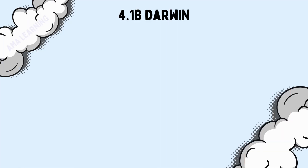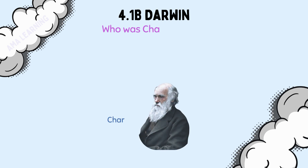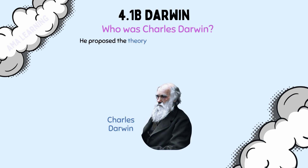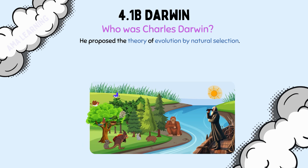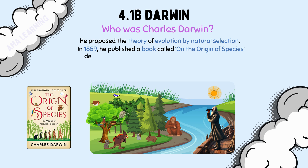Let's begin by understanding the work of Charles Darwin and Alfred Russell Wallace, two pioneering scientists who developed the theory of evolution by natural selection. Charles Darwin was a scientist who travelled around the world observing species diversity and collecting evidence for his theory of evolution. In 1859, he published a book called On the Origin of Species, detailing how species evolve over generations through natural selection.